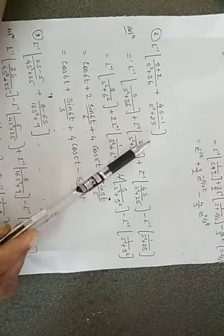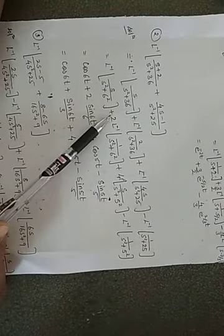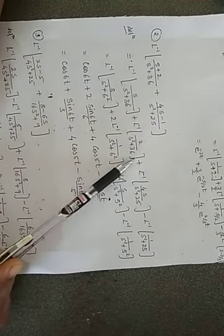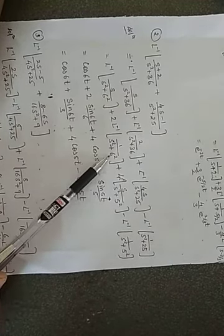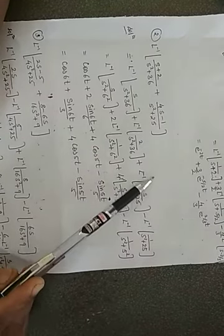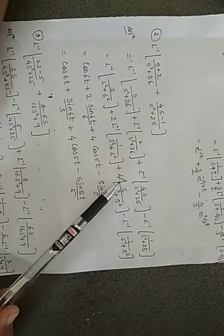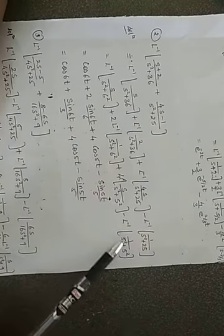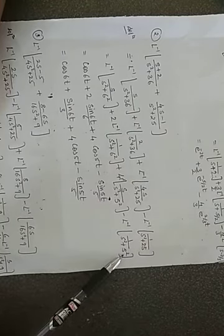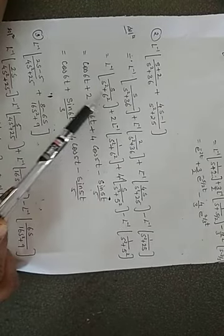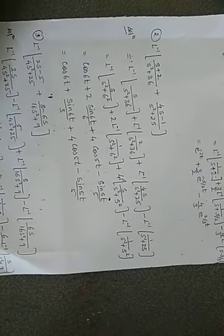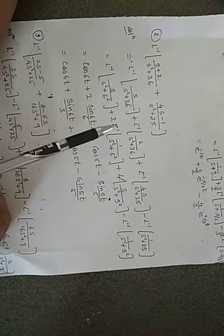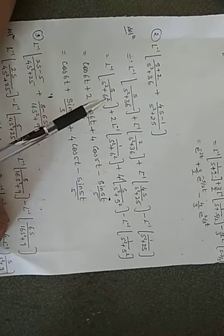2 is acting as a constant, remove it outside. So it will become 2 times L inverse of 1 upon s squared plus 6 squared. Remove 4 outside. So L inverse of s upon s squared plus 5 squared, minus L inverse of 1 upon s squared plus 5 squared. Since s squared is there, the answer must be in terms of cosine or sine — a trigonometric function.